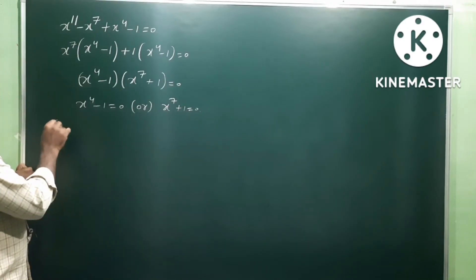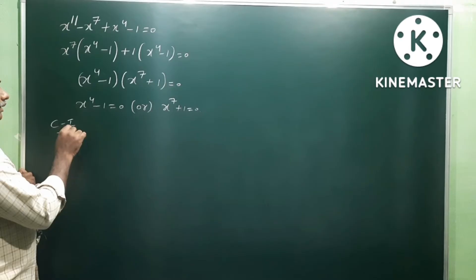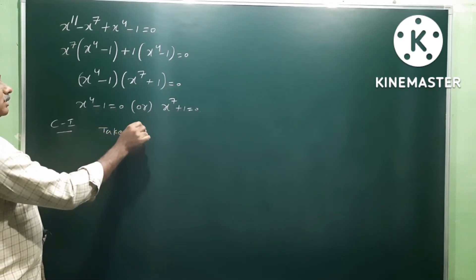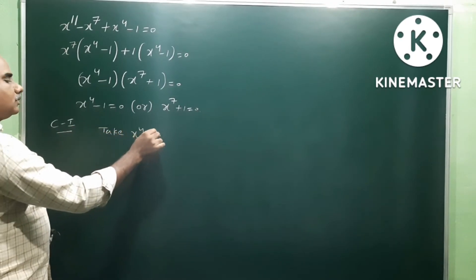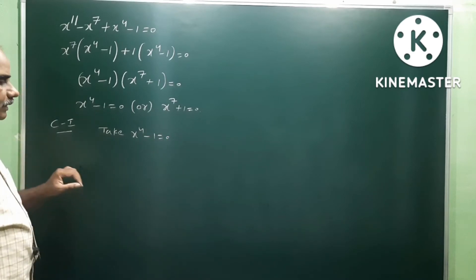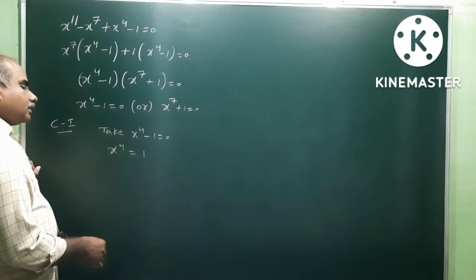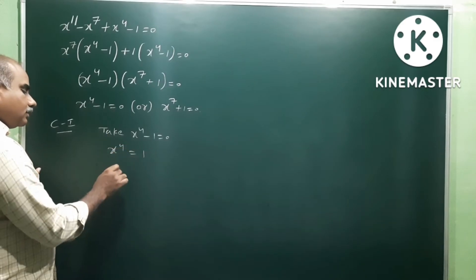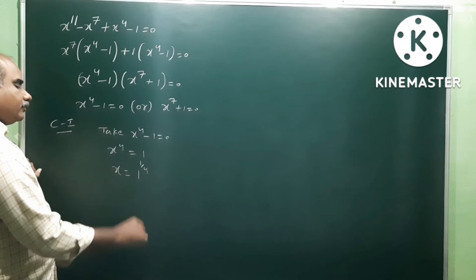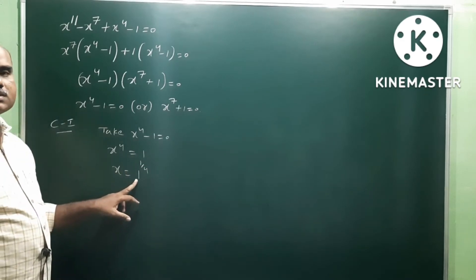So we have Case 1 and Case 2. Case 1: take x power 4 minus 1 equal to 0. So x power 4 is equal to 1, which means x is equal to 1 power 1 by 4 — that is, the fourth roots of unity.